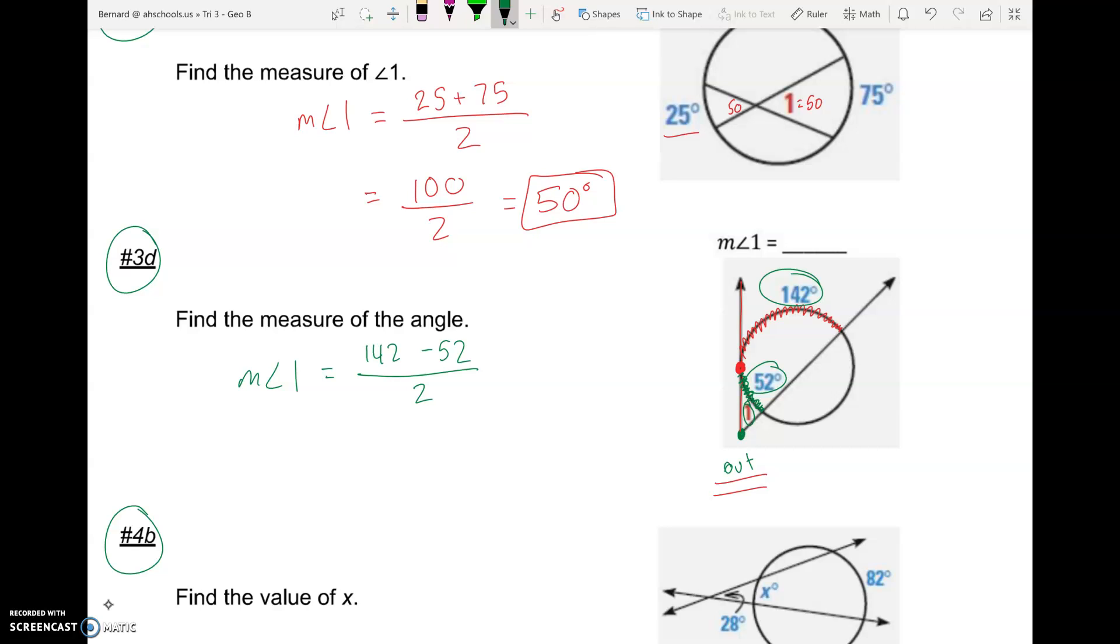And 142 minus 52 is 90. And we still got to divide that by 2. 90 divided by 2 is 45 degrees. 45 degrees. And that is our answer for angle 1 in problem 3D.